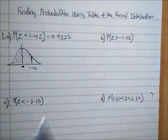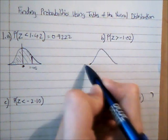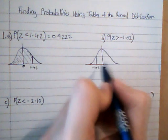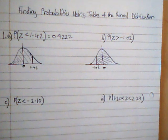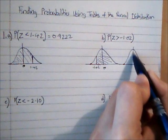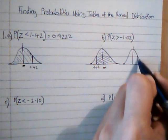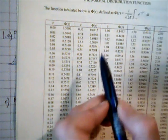For the second question, we're looking for the probability that Z is greater than negative 1.02. On a sketch, negative 1.02 is to the left of 0, and we want the area to the right of it. Since we can only look up 'less than' values in the table, we use the symmetry property of the normal distribution: P(Z > -1.02) = P(Z < 1.02). Looking up 1.02 in the table gives 0.8461.